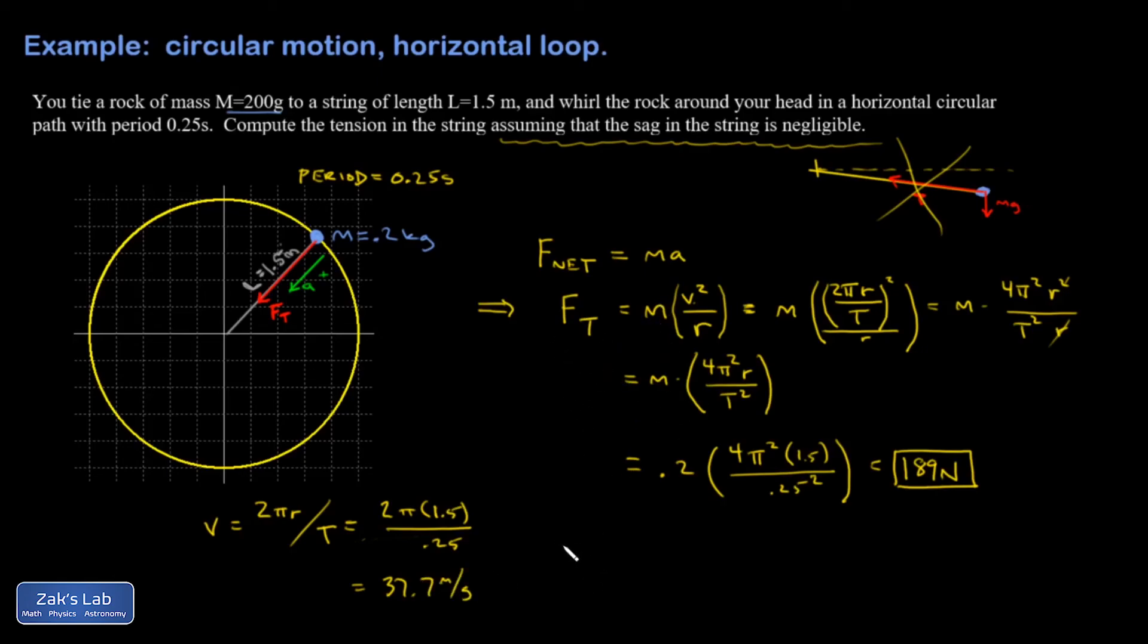And if I then plug that in all the way back at this step, I should come out with the same answer. So I have 37.7 squared over 1.5. And I come out with 189.5, but this time it rounds up. And that's a good point to make. If I'm doing a problem two different ways to check my answer, I'm not going to worry about the rounding. I know it's not exactly right, but it's close enough to convince me that I've done it right.